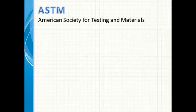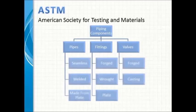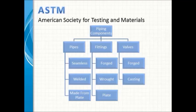Piping components fall into three main categories: pipes, fittings, and valves. Pipes can be seamless, welded, or made from plate for large bore. Fittings are forged for small bore or rolled for large bore, and include items like spectacle blinds. A seamless pipe has a different ASTM number from a welded pipe, and forged fittings have a different ASTM number from rolled fittings.